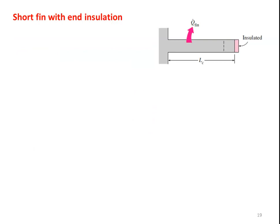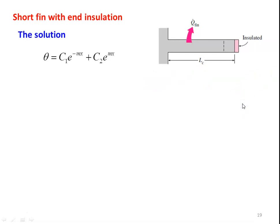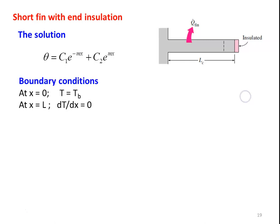The first type: short fin with end insulation. Consider the fin attached to a plane wall. The end is insulated and there is heat transfer from the fin. The fin is of length L. The solution for the fin is theta equal to C1 e to the power of minus mx plus C2 e to the power of mx. We require two boundary conditions to find the values of C1 and C2. The boundary conditions are: at x equal to 0 at the base of the fin, the temperature is Tb. And at x equal to l, end of the fin, dT by dx equal to 0 — the fin is insulated. There is no heat transfer from the tip of the fin, so the temperature at the tip will be constant, and for constant temperature at the tip the first derivative equals 0.